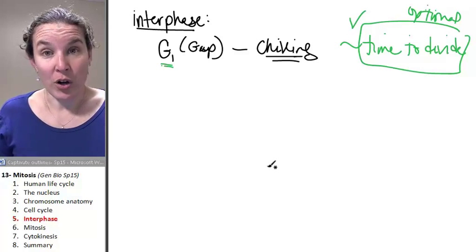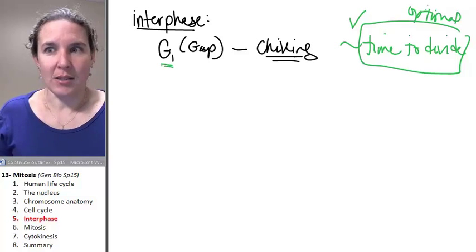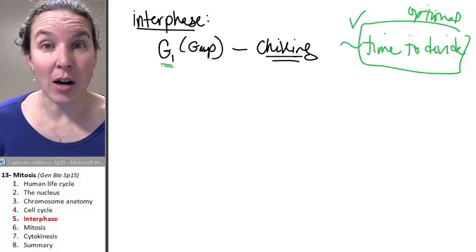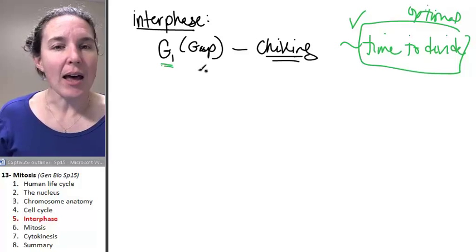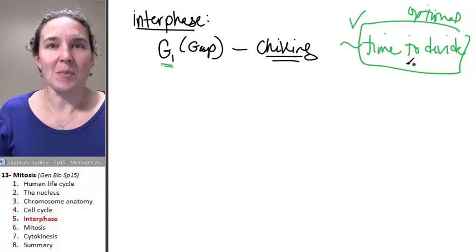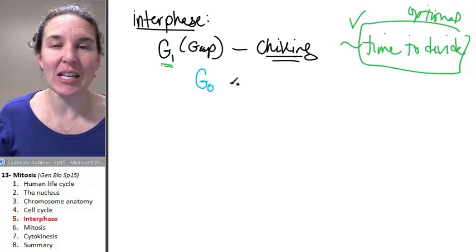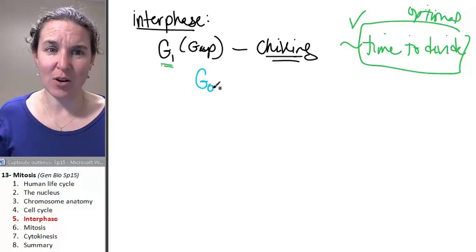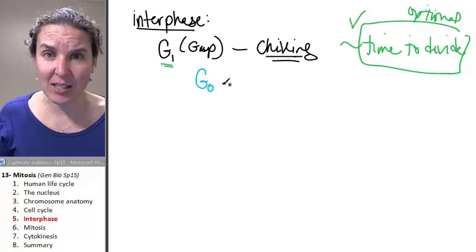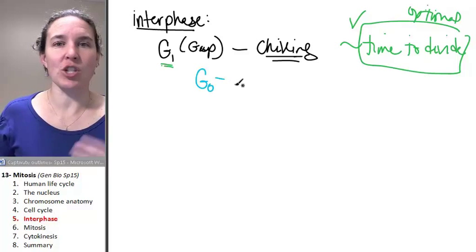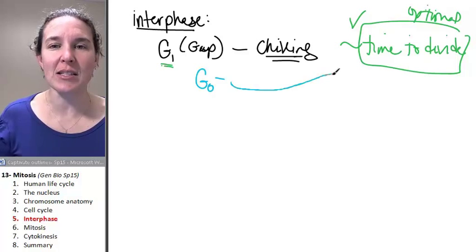For a cell like a neuron, some cells, some neurons, not all neurons, but some neurons, literally never get this message. And if they never get this message, they're considered to be in G0, that's a zero, but they call it G naught. And that means it's just going to chill forever. It's never going to get this message.